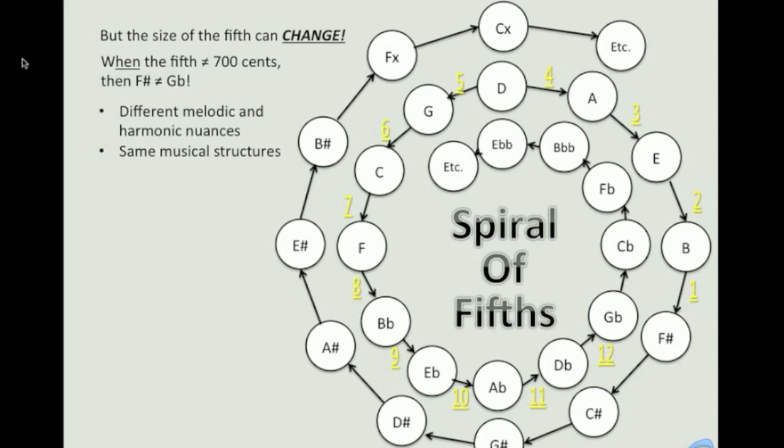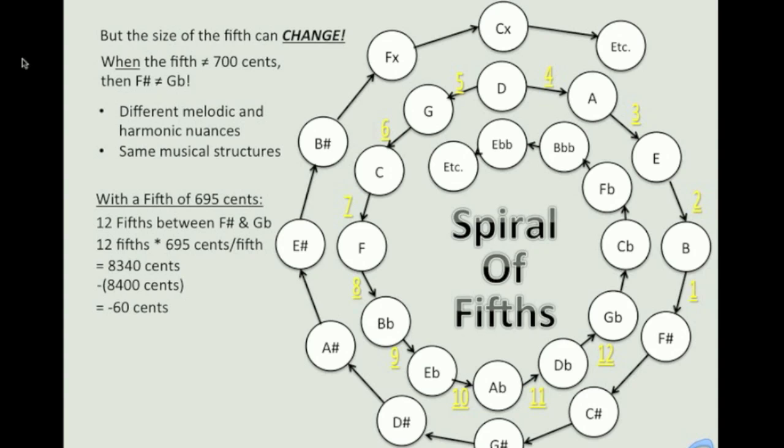If we flat the fifth a nearly imperceptible 5 cents to 695 cents, from F-sharp to G-flatten-fifths is still 12 of these slightly flatter fifths. 12 fifths times 695 cents per fifth is 8,340 cents. Dropping that note down six octaves gives 8,340 cents minus 8,400 cents, which leaves us with negative 60 cents. That means that, with a fifth of 695 cents, F-sharp differs from G-flat by 60 cents.